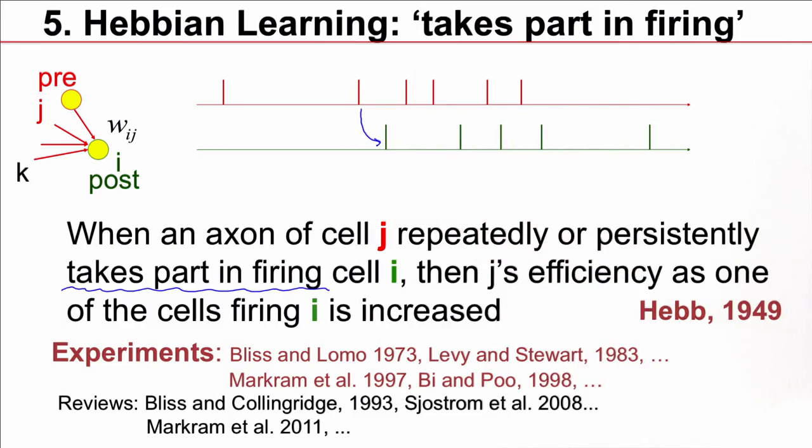While early experiments on long-term potentiation, on Hebbian learning, basically used a rate paradigm in the sense that neurons were firing at high rates and spike-timing was not considered, in the 1990s, people started to look at spike-timing effects.